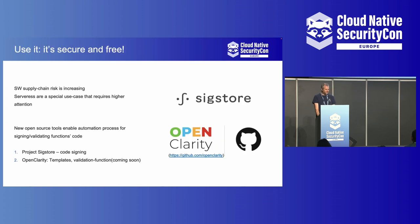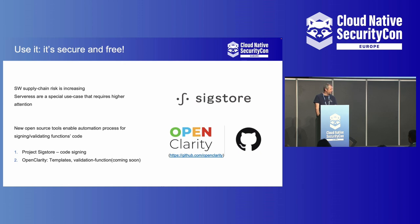Supply chain risk is increasing. Serverless is a special use case — it's much harder to validate. You can use open source tools like SigStore for code signing, or OpenClarity, which is an open source repository where you can find templates. You can find the validating function going to be uploaded in the next few days. We encourage everyone to go ahead and use it, give us good feedback, and we plan to upload a validating function for any cloud provider.